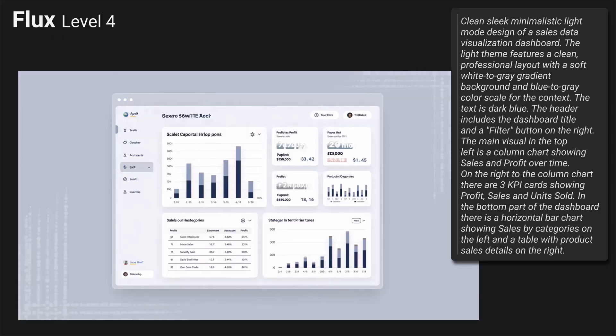Flux did a solid job again, although there is no indication it's a sales dashboard. There is a title in the header and you could read a filter button on the right side. The main visual is a column chart on the top left. There are three KPI cards on the top right plus a fourth visual. There is some indication of profit but the other labels don't make sense. It swapped the table and column chart — the table is on the left and the column chart instead of bar chart is on the right. The layout is pretty clean, the color composition is aesthetic, the visuals are clear except for the text, and it could be done in Power BI.